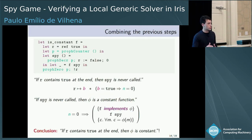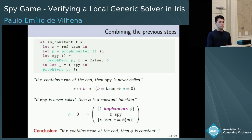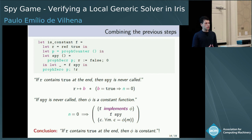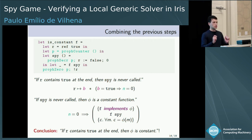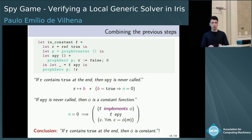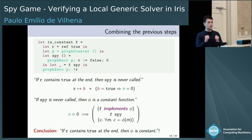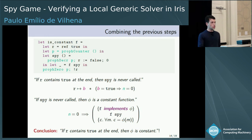To recapitulate the two main steps in the proof sketch of is_constant: we have seen that at the end of the code, if r contains true, then spy has never been called. And we have seen that if spy has never been called, then phi is a constant function. Therefore, we can conclude the postcondition: if r contains true, then phi is a constant function.